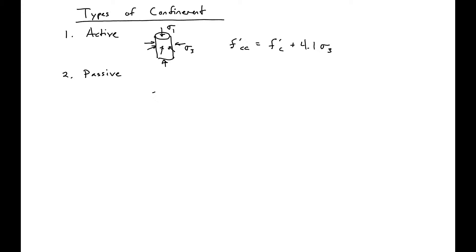There's also passive confinement. And passive confinement occurs due to the difference in Poisson's ratio between steel and concrete. So let's say we have a concrete cylinder that's surrounded by steel. And so we have concrete on the inside, and we have steel on the outside.